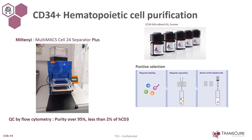The first step when you want to humanize animals is to have good hematopoietic stem cells. The purification of the hematopoietic stem cells from cord blood is performed using the MultiMACS from Miltenyi. Using this machine in combination with the CD34 microbead kit, we are able to achieve a positive selection of the hematopoietic stem cells with a high purity of 95% with less than 2% of contaminating human CD3.